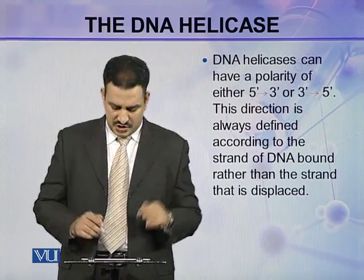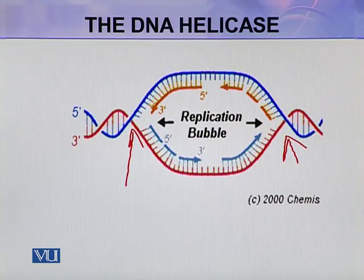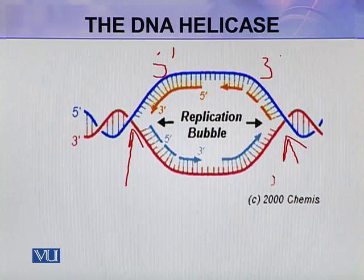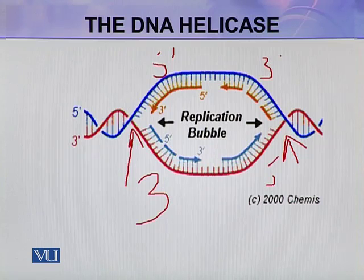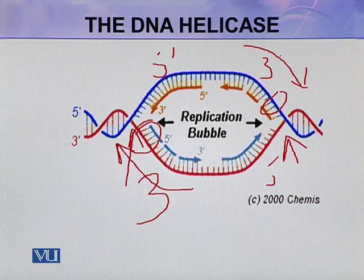The bound strand defines the direction. As you can see in this diagram, this is the replication fork and this entire region is the replication bubble. In this replication bubble, one strand runs 5' to 3' and the other runs 5' to 3' in the opposite direction. The strand to which the helicase ring binds will decide the polarity — whether it is 5' to 3' or 3' to 5'. This is the polarity of the DNA helicase.